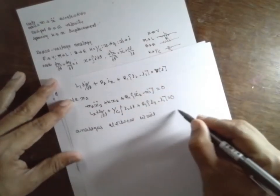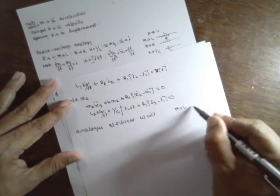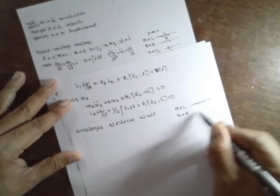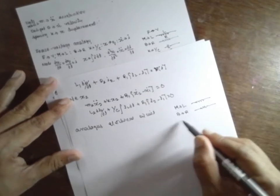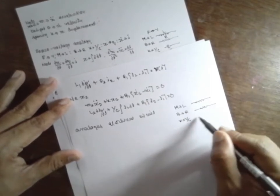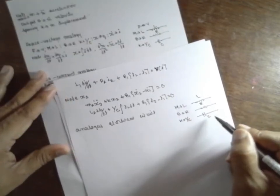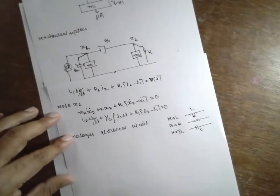That means M has to be replaced with L inductance, B has to be replaced with R resistance, K has to be replaced with 1 by C, that is capacitance. L, R and C you have to replace. Now based on this diagram, you have to replace it.